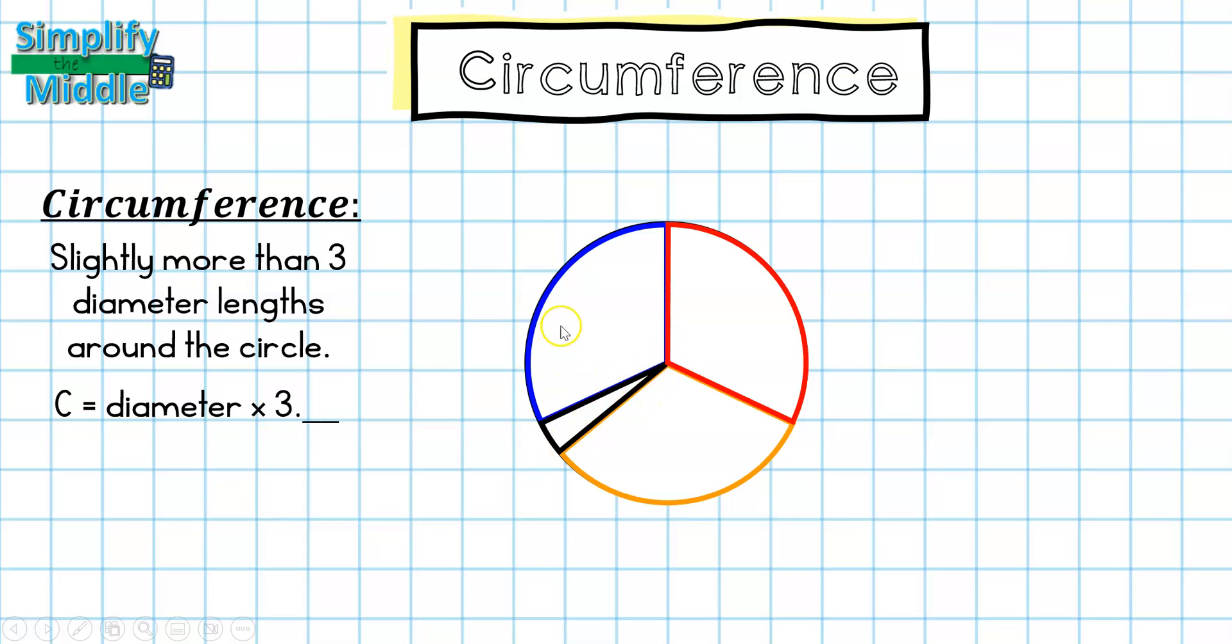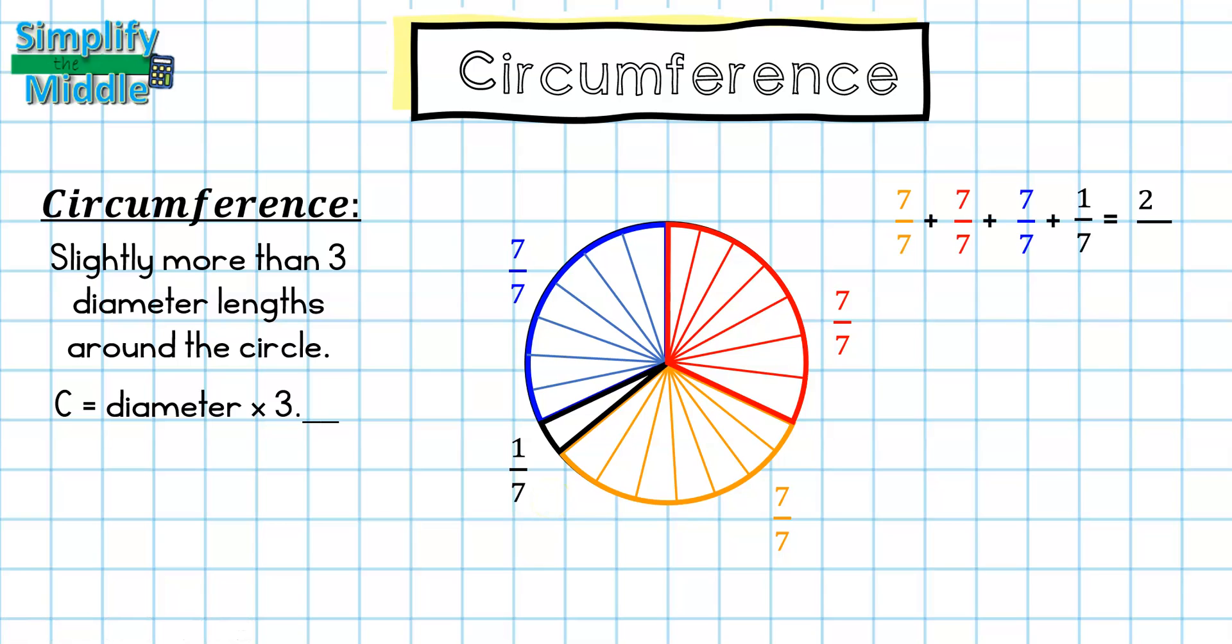If I were to split these remaining sectors into pieces that were all about this size, I would be able to more accurately decide how much of a section this is. When I split them all up, I noticed that there's seven pieces in each full sector here. So each diameter made seven sevenths and then this has one seventh.